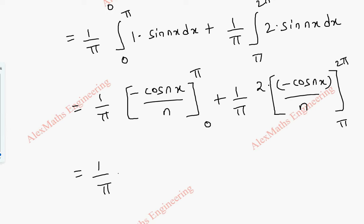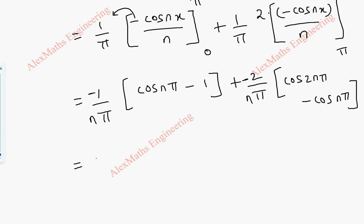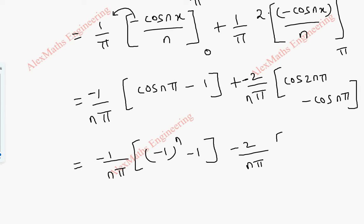Taking out the factor (1/π) and the minus sign, we substitute the limits. The first part gives [−cos(nπ)/n + cos(0)/n] = [−(−1)ⁿ + 1]/n. The second part gives (2/π)[cos(2nπ)/n − cos(nπ)/n] = (2/nπ)[1 − (−1)ⁿ]. So bₙ = (−1/nπ)[(−1)ⁿ − 1] − (2/nπ)[1 − (−1)ⁿ].